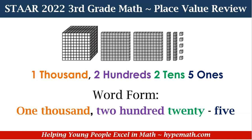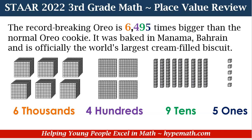Let's look at a word problem and go over it one more time to make sure we really understand what it looks like to put a number in a place value chart with place value blocks in standard form, expanded form, and word form. In our example, the record-breaking Oreo is 6,495 times bigger than a normal Oreo cookie. It was baked in Manama, Bahrain, and it is officially the world's largest cream-filled biscuit. So we are looking at our number 6,495.